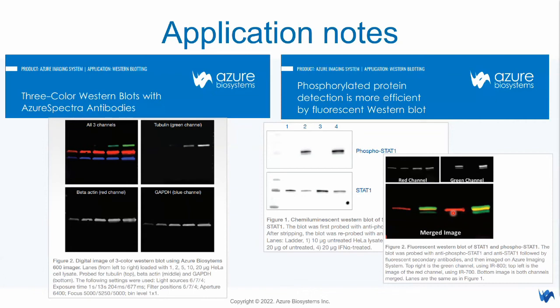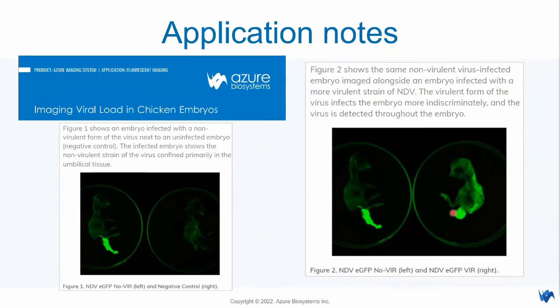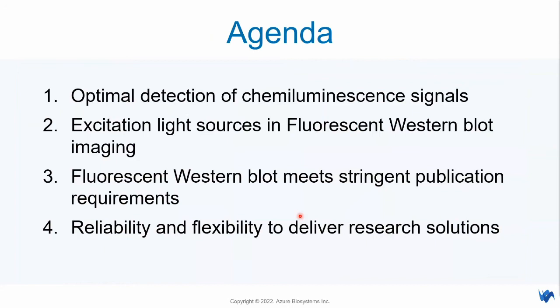With three-color multiplex fluorescent western blot, including a housekeeping or total protein as a third channel, you can image phosphorylated and total protein without cutting the blot or stripping and re-probing. We have also extended the system to image viral load in chicken embryo, providing preliminary study representative images to showcase how the data looks in this big field of view. That covers how to optimally detect chemiluminescent signals, excitation light sources in fluorescent western blot imaging, why fluorescent western meets the stringent publication requirement, and how the imaging system delivers research solutions with reliability and flexibility.